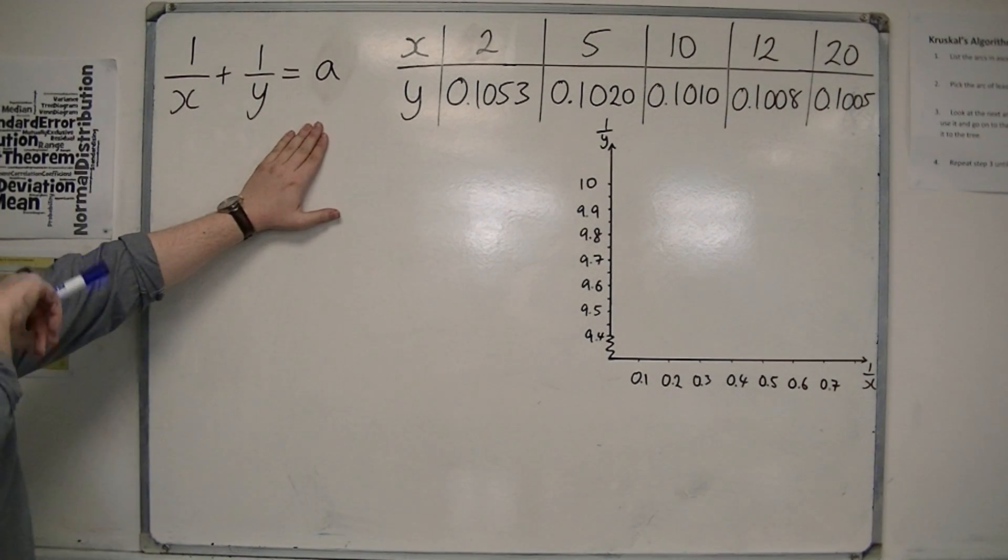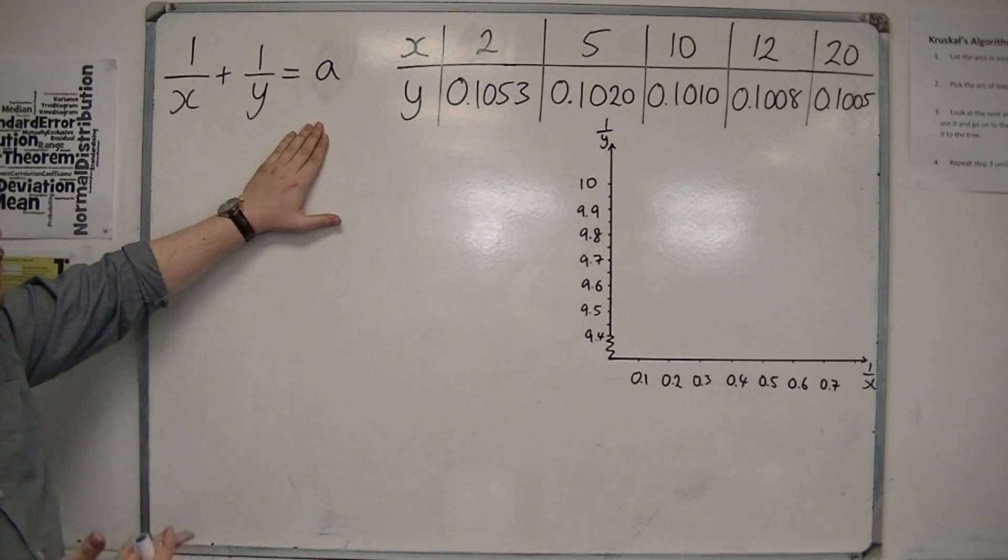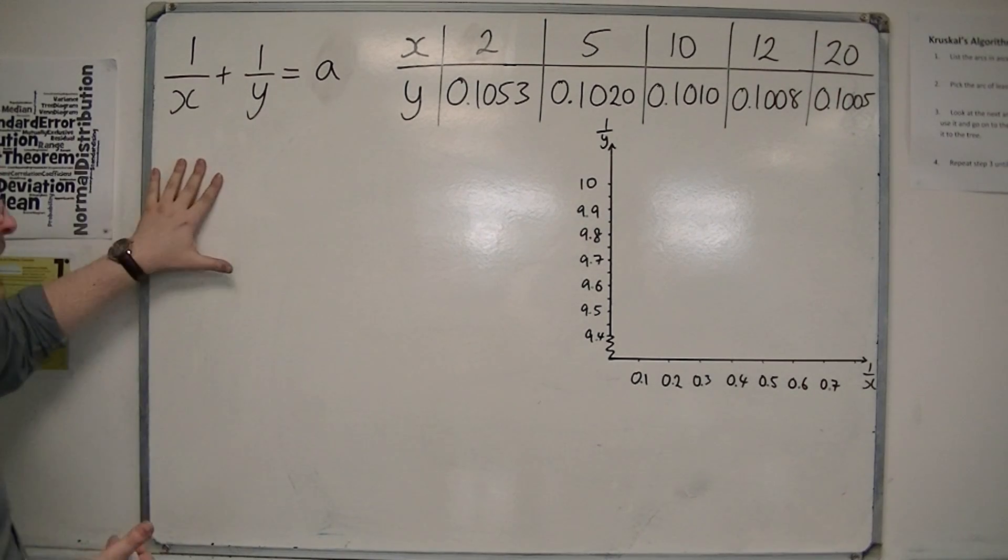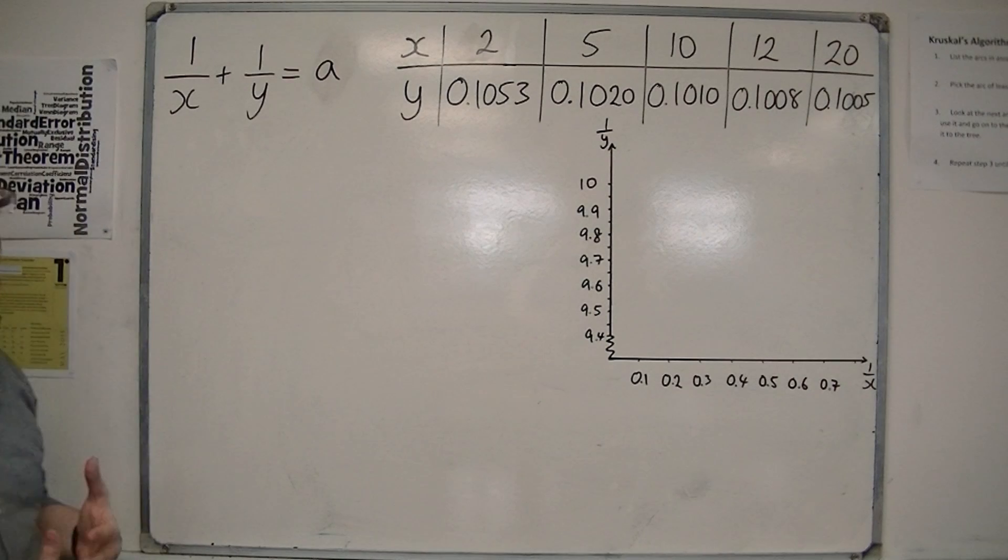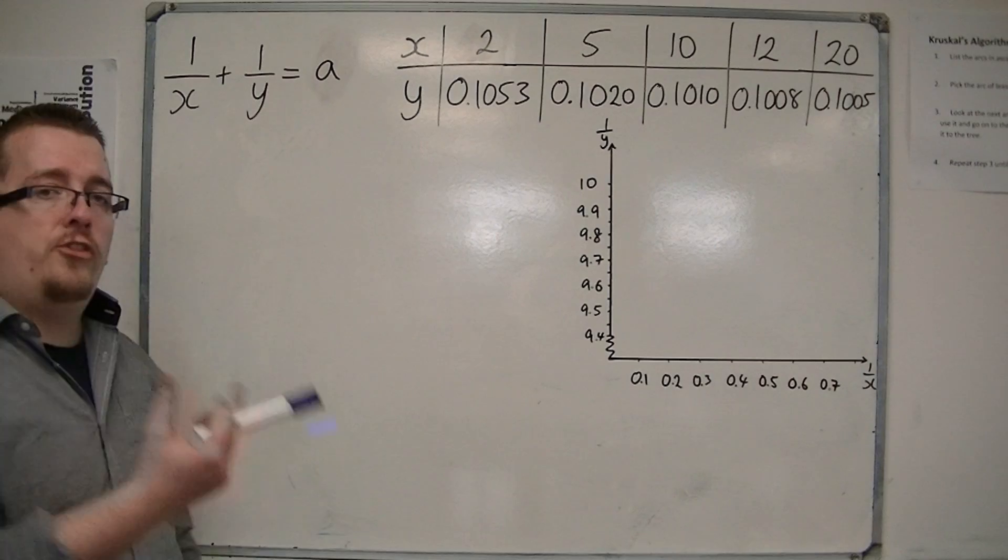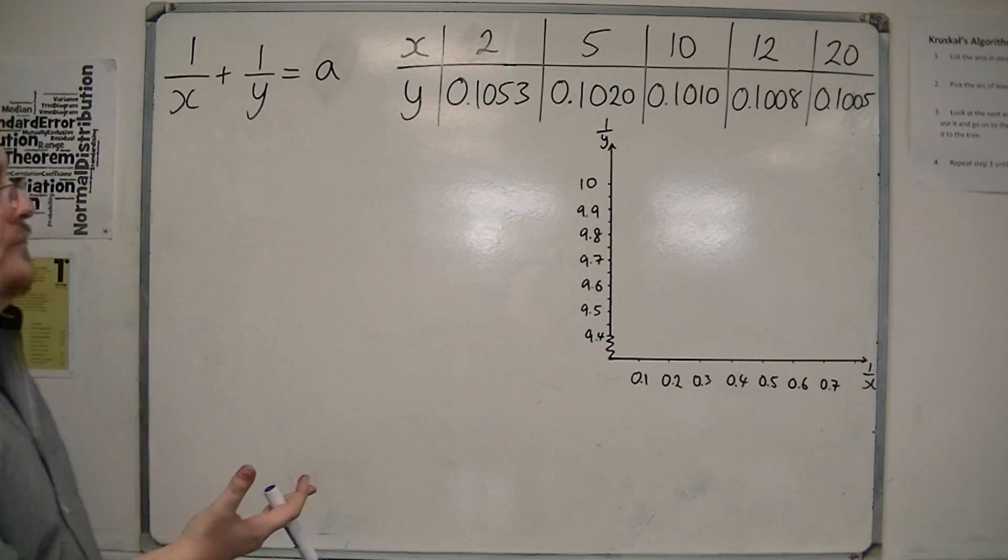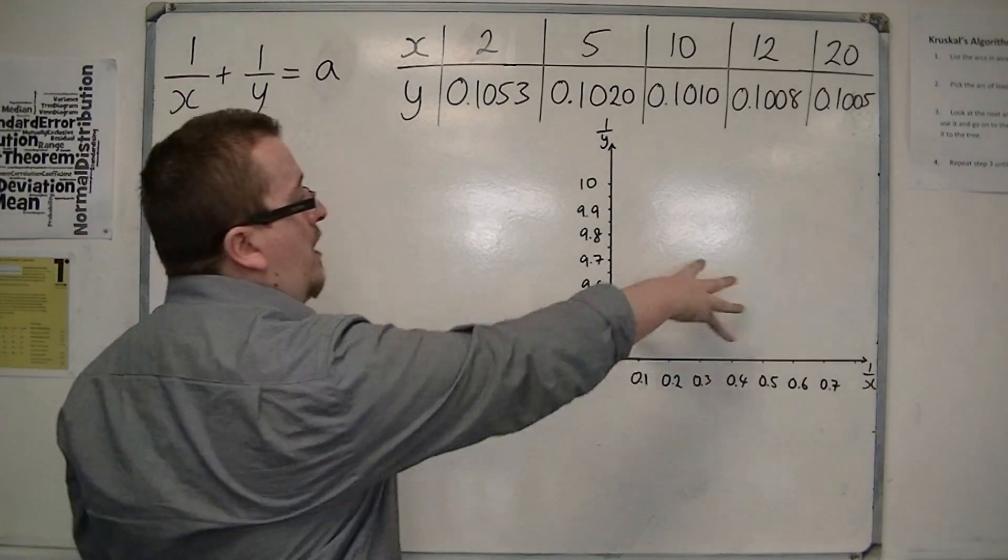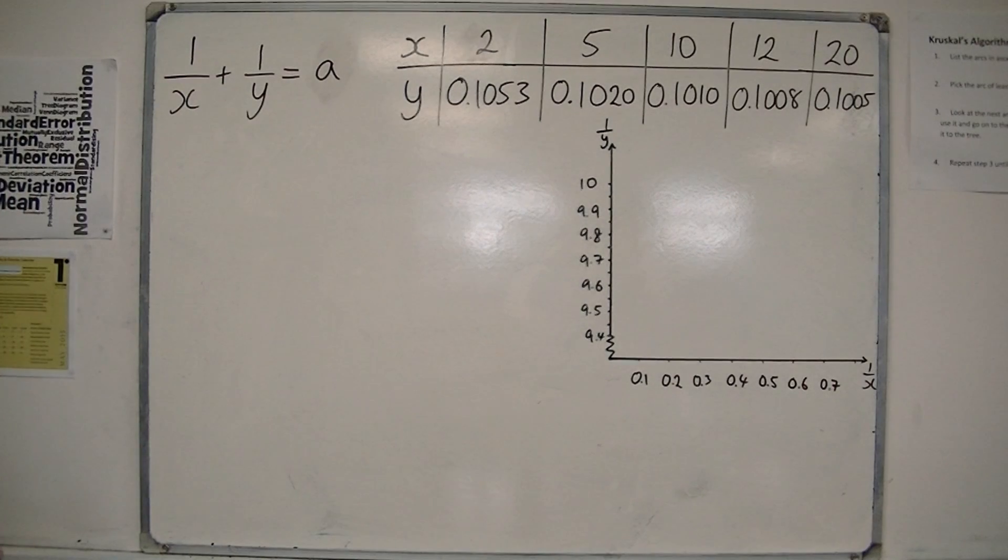So what I want to first show is that this is correct, and I can show that this is correct by plotting 1 over x by 1 over y and getting a straight line graph. So I've got my graph ready for me to plot that data.